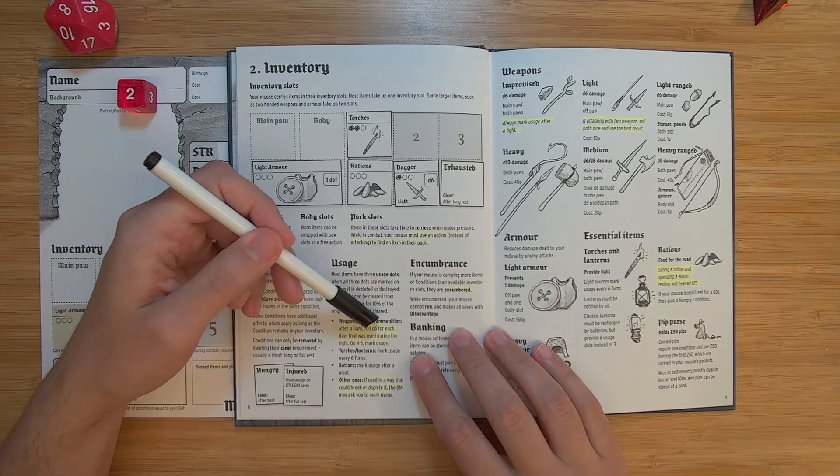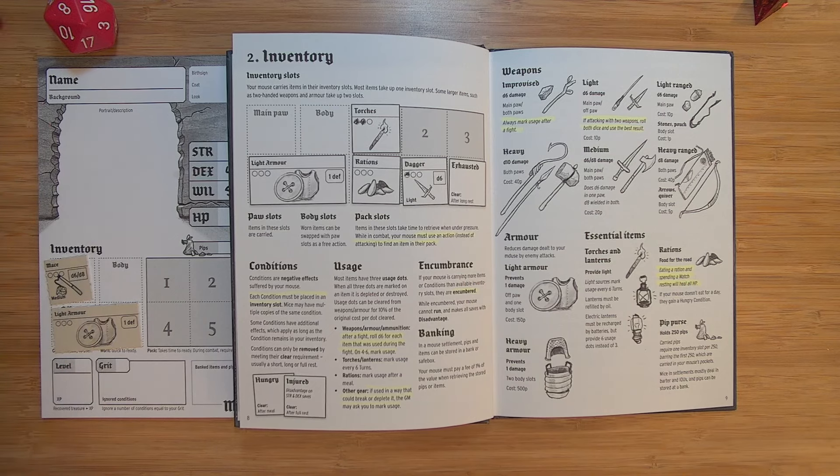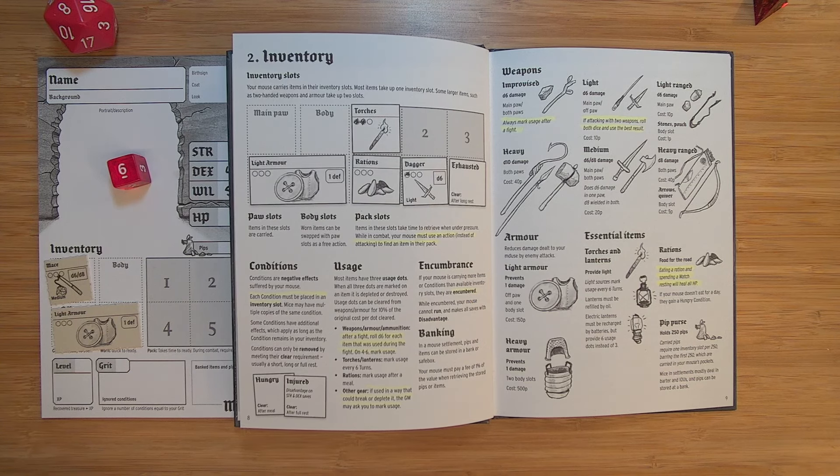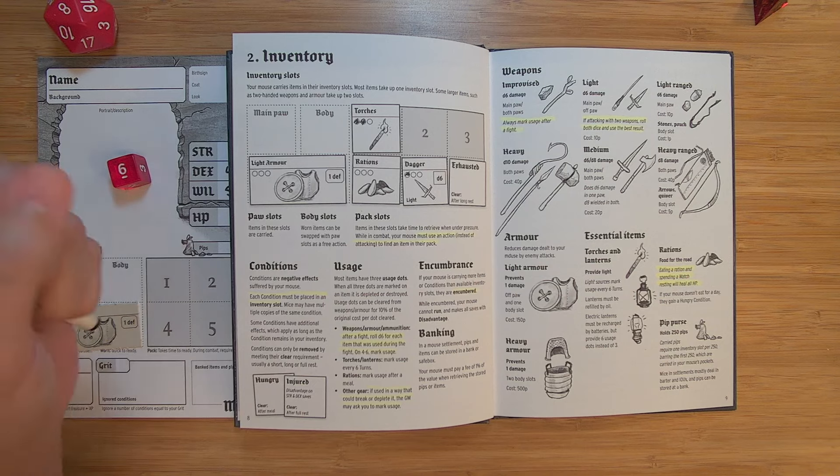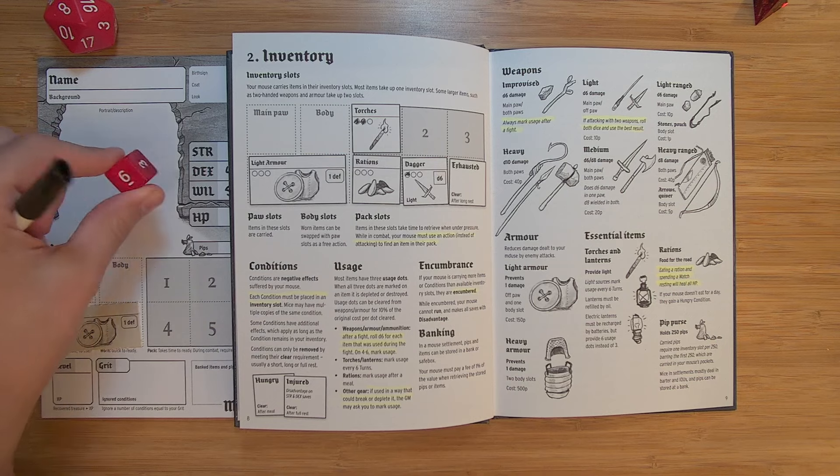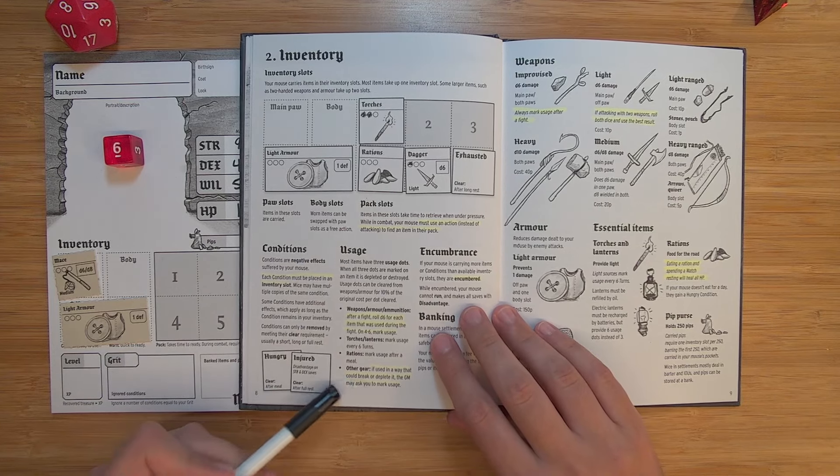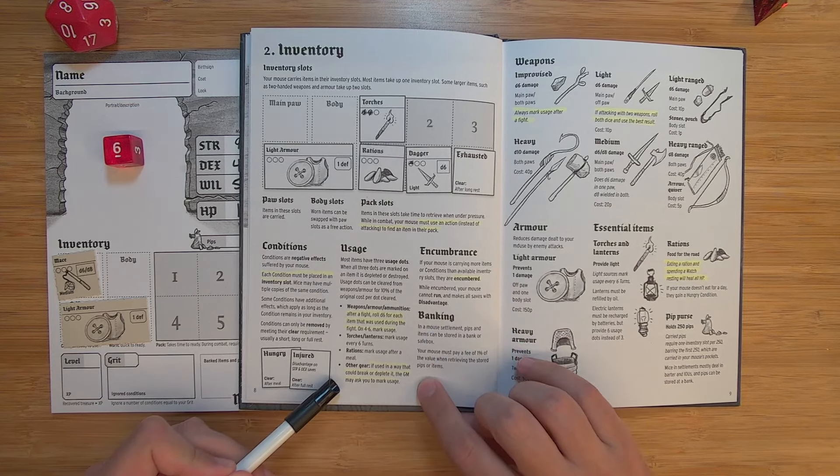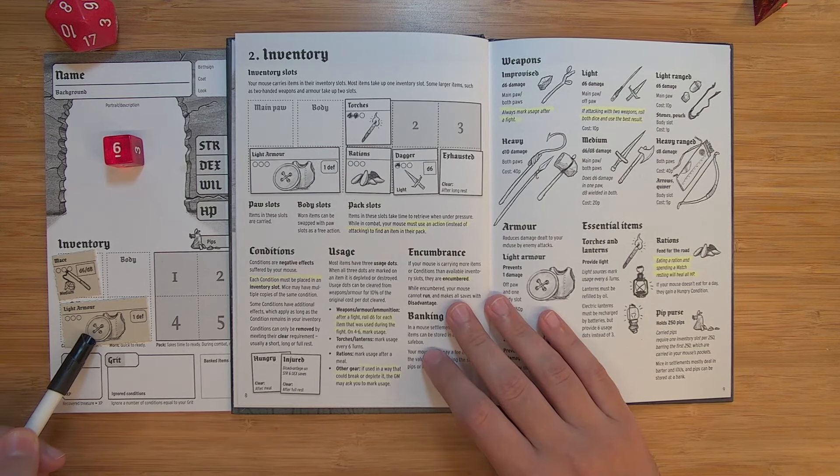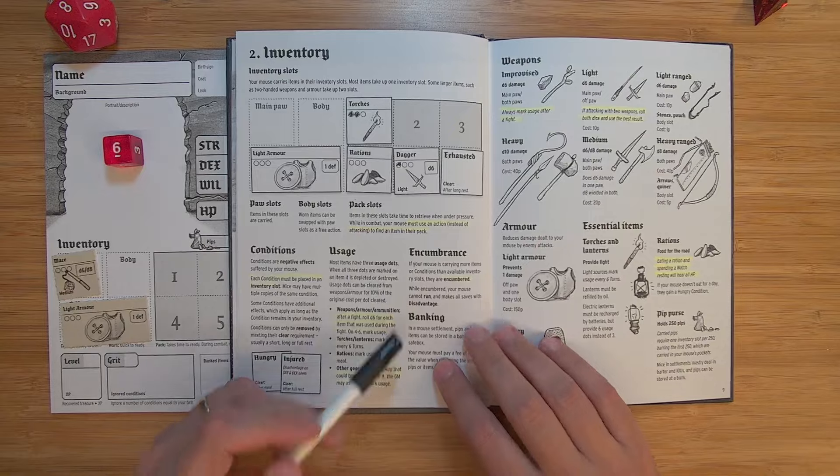So for weapons, armor, and ammunition, after a fight, you roll a d6 for each item that was used during the fight. So if I attacked with my mace during that fight, after the fight is over, I would roll 1d6, and hey, I got a 6. So on a 4 to 6, you mark usage. And that's actually something that you have to get used to because Mouse Ritter is a roll under system rather than roll over. So bigger numbers on the dice is usually less good for you. So we'll get to more of that in a second. There's rations. You mark usage after each meal. And then other gear. If it's used in a way that could break or deplete it, the GM may ask you to mark a usage. So maybe you fall off a thing and you say, can I hold my shield out in front of me to help me break my fall? The GM might say, yes, you don't take damage, but mark a usage on your armor. That kind of thing might be allowed.